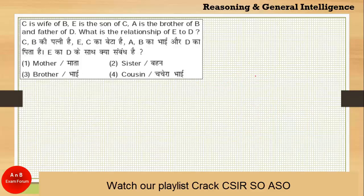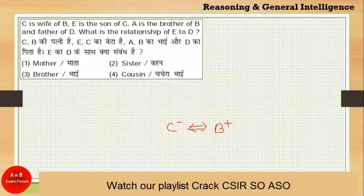The first question: C is wife of B — let's draw the family tree. C is wife, so wife means a minus symbol. There is a husband-wife relationship between C and B, so B must be male. Next, E is son of C — son means male, so E is the son of C and indirectly B is the father of E.